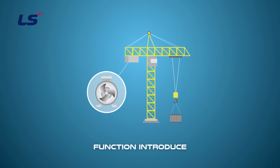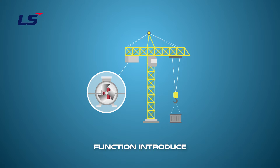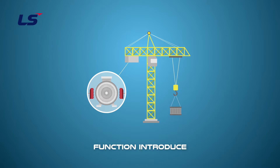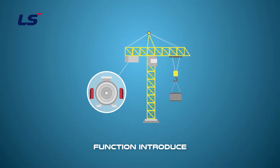Mechanical brakes are primarily used for vertical loads and are a physical device for securing the motor for safety reasons. Cranes, lifts, etc. are devices for mechanically holding the load vertically up and down in case of an emergency.